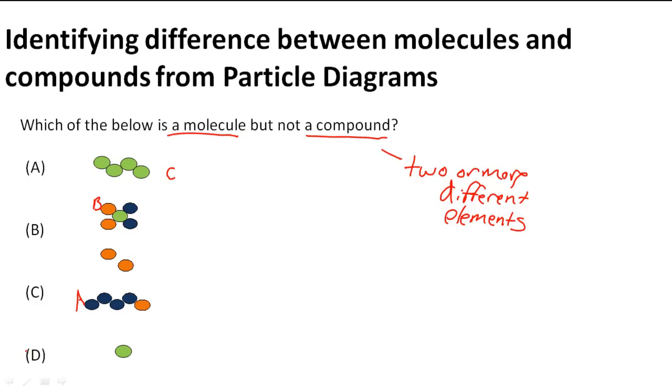So D actually can't be either because here it's just the element C. So if I write the chemical formula it would just be C. And remember molecules and compounds involve more than one atom. So D is not our answer.